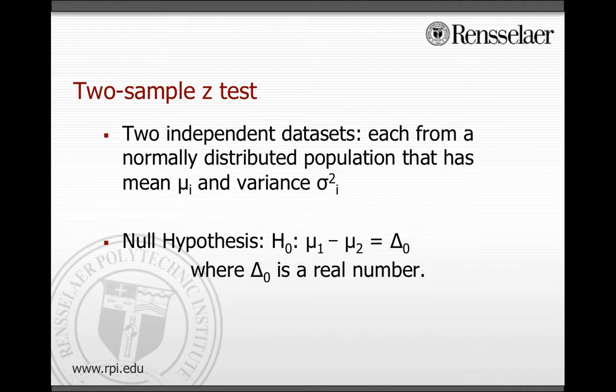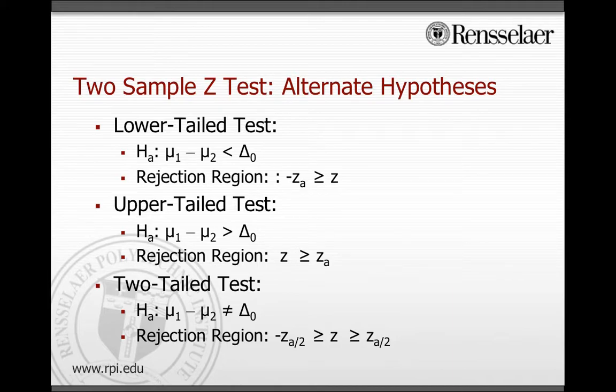As with a regular one-sample hypothesis test, there are three possible types of alternate hypotheses: lower-tailed, upper-tailed, and two-tailed. The test statistic is calculated using this formula.